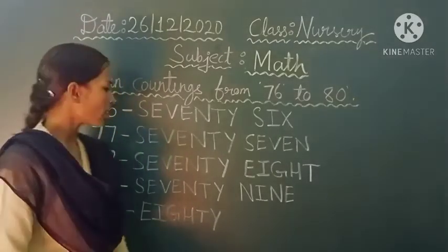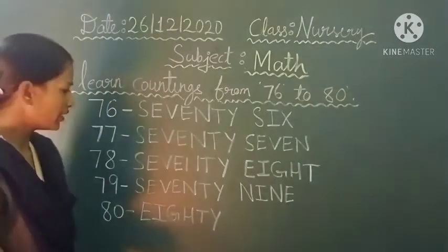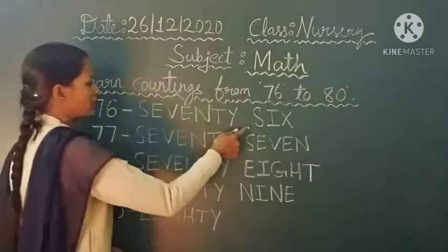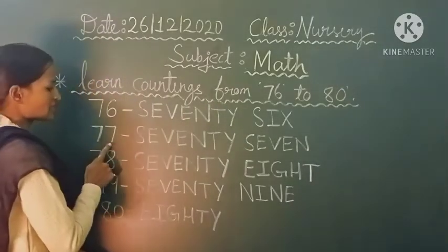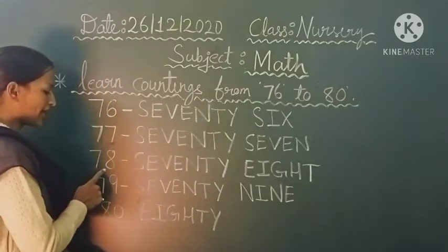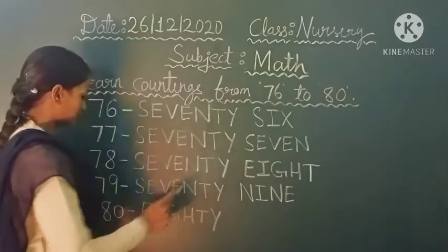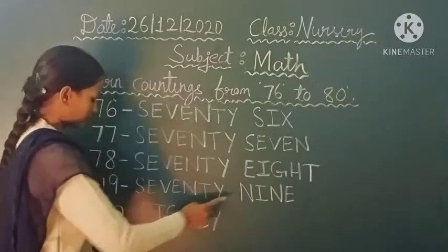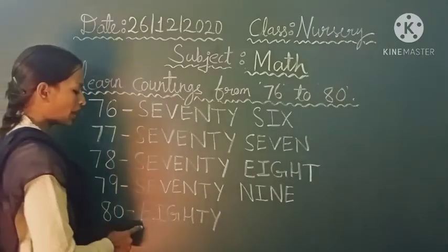Now we are reading these all contents directly. 76, seventy six. 77, seventy seven. 78, seventy eight. 79, seventy nine. 80, eighty.